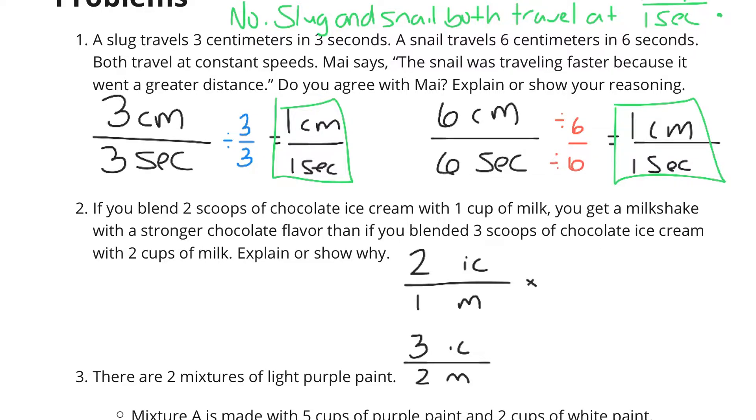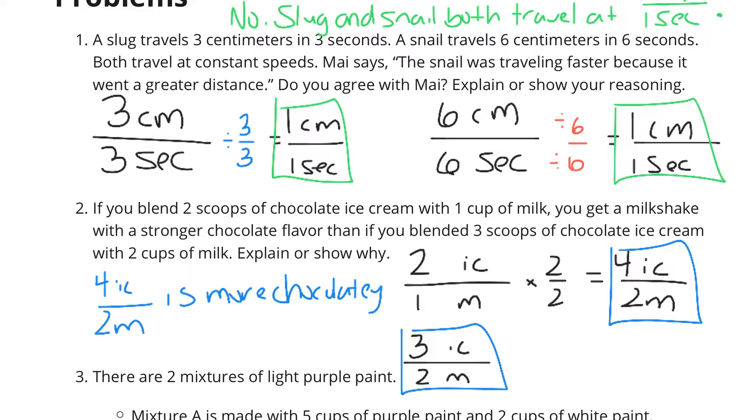Well, if I multiply and have a double batch here of the first, that gives me 4 scoops of ice cream to 2 cups of milk. And now I can compare these things. The 4 scoops of ice cream to 2 cups of milk and the 3 scoops of ice cream to 2 cups of milk. Basically, if you have 4 scoops of ice cream to 2 cups of milk, that is going to be more chocolatey than 3 ice creams to the same 2 cups of milk.